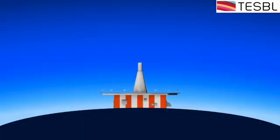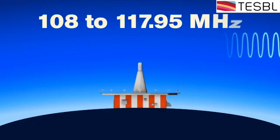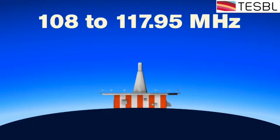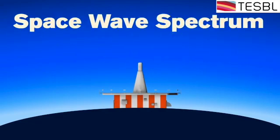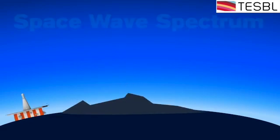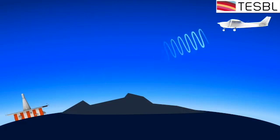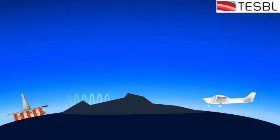Since VORs operate within the frequency band of 108 to 117.95 MHz, they fall into the space-wave spectrum. This does allow for relatively interference-free navigation. However, reception is limited to line of sight, which prevents a pilot from receiving a signal when at low altitudes or in mountainous terrain.